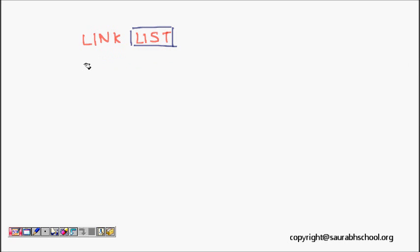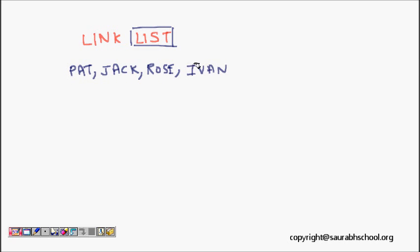A list is an ordered set of items. For example, a list of names of students like Pat, Jack, Rose, and Ivan. This is a list of persons where Pat is first, Jack is second, Rose is third, and Ivan is fourth. A list contains similar data items.